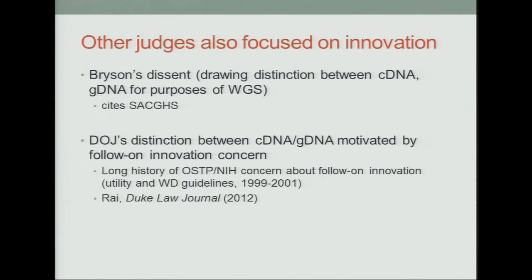NIH was a critical player and has had a long history in helping shape genomic patent policy starting at the end of the 20th century — particularly the utility and written description guidelines that NIH significantly shaped, which had a very positive influence in ensuring genomic innovation was not impeded by patents. This role of NIH over the last 15 years has been drawn out in exhaustive detail in a Duke Law Journal article published last year, so if you're interested, you can go to that. The focus on innovation and the concern that gDNA patents might impede whole genome sequencing, whereas cDNA patents are unlikely to, was central.